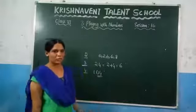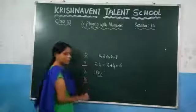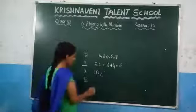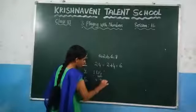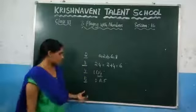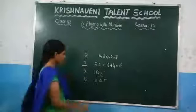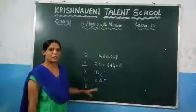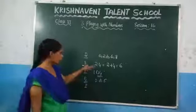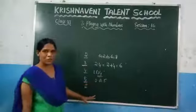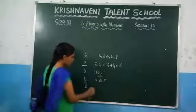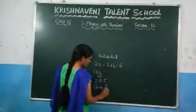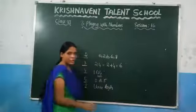We also discussed the divisibility rule for 4: just check the last two digits of a number. If the last two digits are divisible by 4, then the given number is divisible by 4. And after that, we checked the divisibility rule for 5: the unit digit of a number should be either 0 or 5. If so, then the number is divisible by 5. And we discussed the divisibility rule for 8: you need to check the last three digits. If the last three digits are divisible by 8, then the given number is divisible by 8.